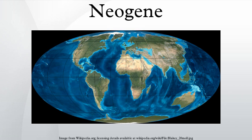The Neogen is a geologic period and system in the International Commission on Stratigraphy geologic timescale, starting 23.03 million years ago and ending 2.58 million years ago. The second period in the Cenozoic era, it follows the Paleogen period and is succeeded by the Quaternary period. The Neogen is subdivided into two epochs, the earlier Miocene and the later Pliocene, and covers about 20 million years.